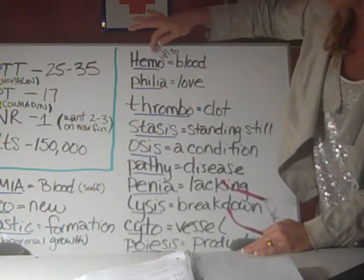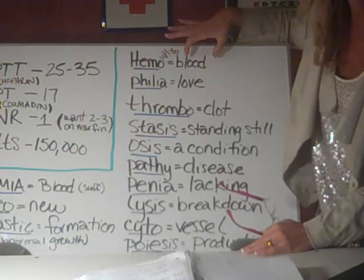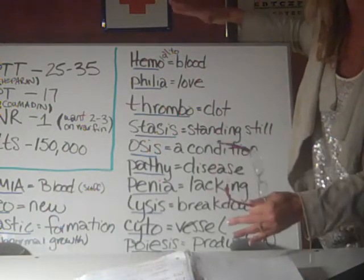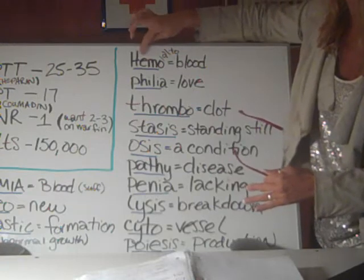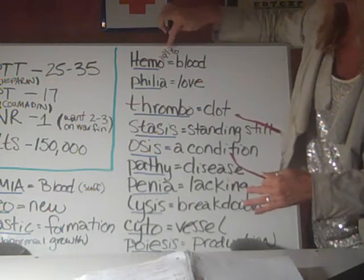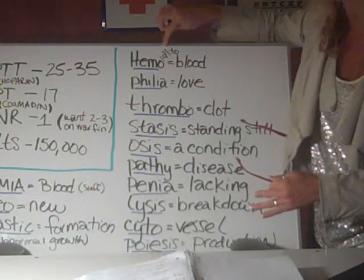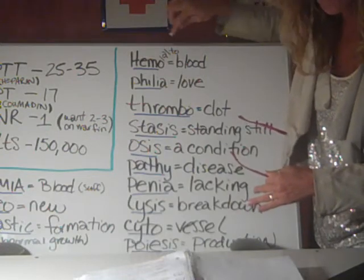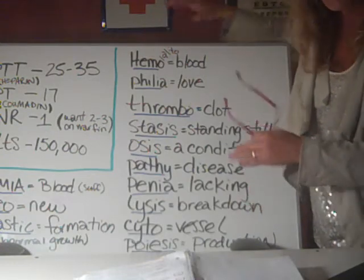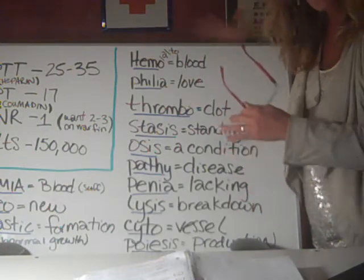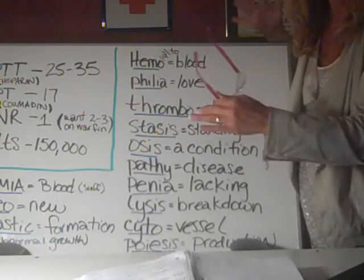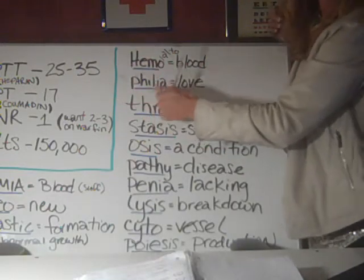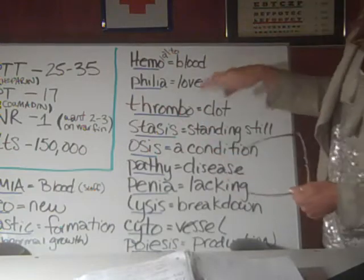Hemo — H-E-M-O — means blood. So if you see hemo in front of anything, it means blood. This word can also be H-E-M-A, hema, which also means blood, or hemato — H-E-M-A-T-O — also just means blood. There are a couple of different variations, but if you see this root, hemo in front, that means you're dealing with blood.